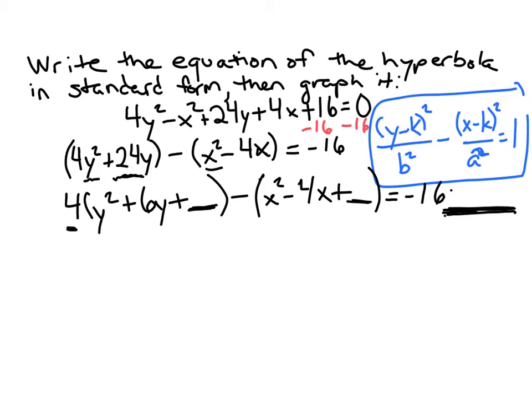Okay so next thing figure out how much to add. Right here inside the parentheses we remember to figure out how much to add you divide by 2 and then you square it so 6 divided by 2 is 3 squared would be 9. Over here take the coefficient of x so in this case negative 4 divide it by 2 which would give us negative 2 and then square it so that'd be positive 4.